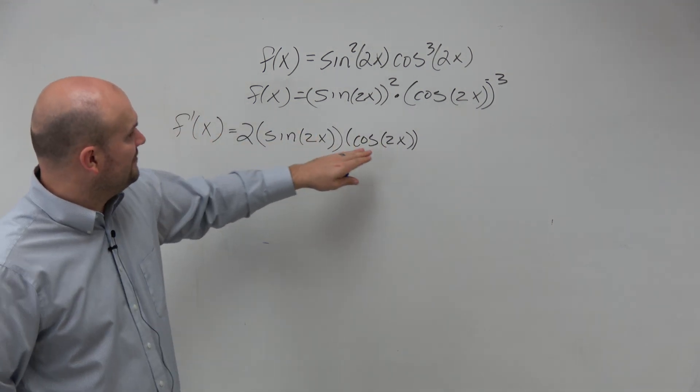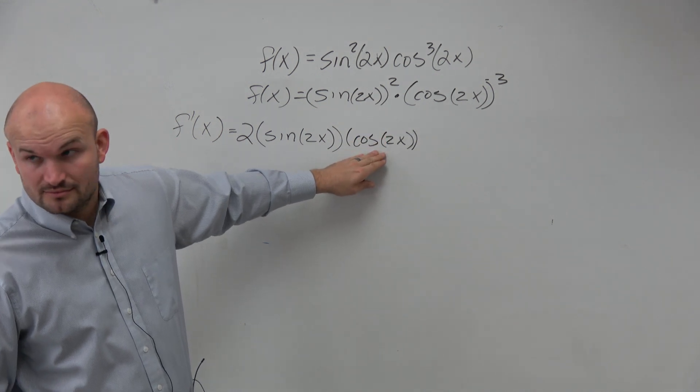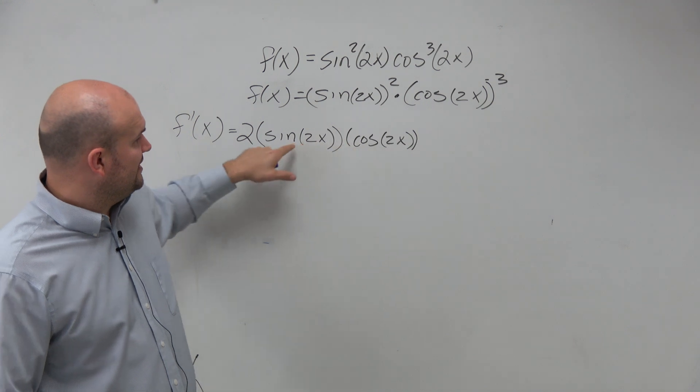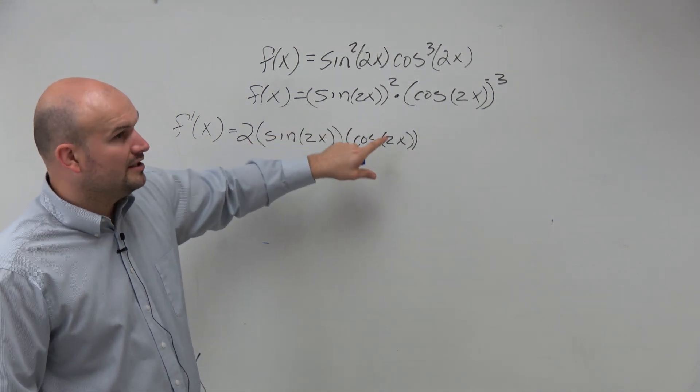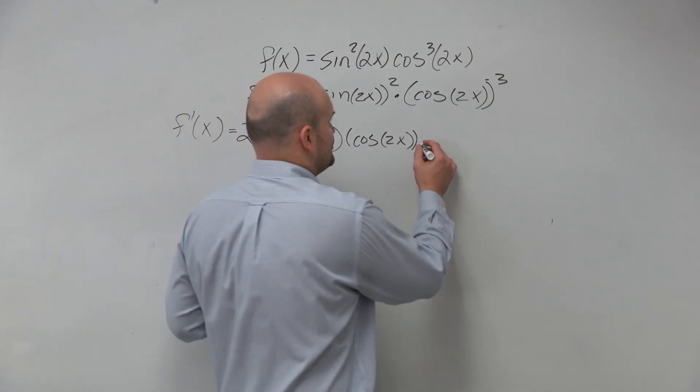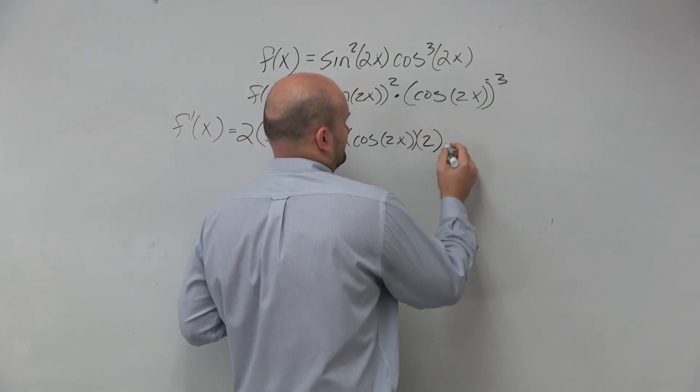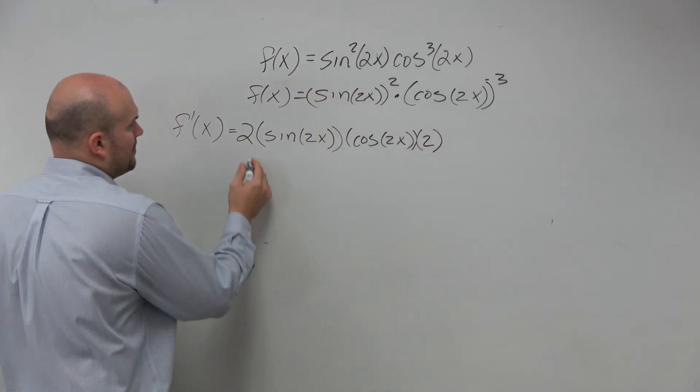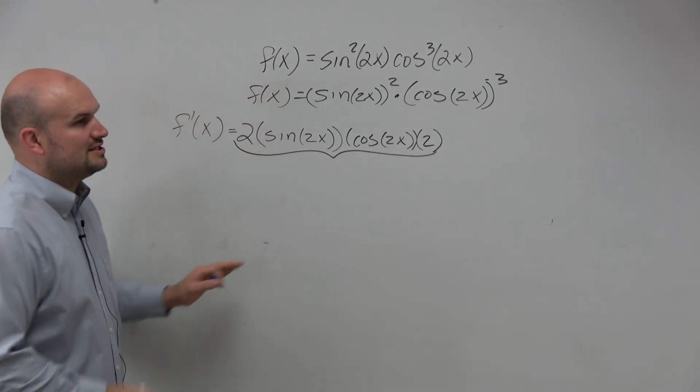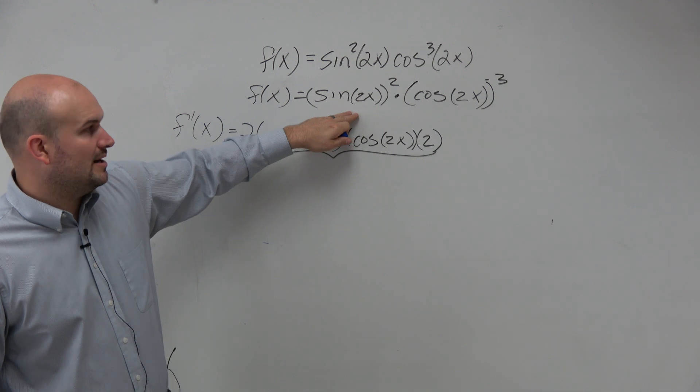So a derivative of the child function, right? But if we're taking the derivative of the child function, it's going to be cosine of 2x times the derivative now of 2x, which is 2. That is just the derivative of sine of 2x squared.